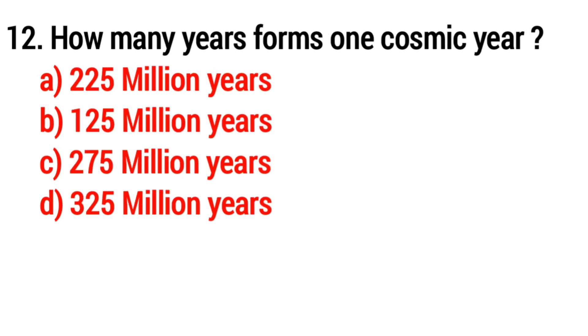Question number 12: How many years forms one cosmic year? The answer is option A, 225 million years.